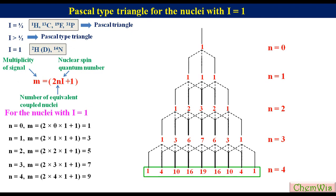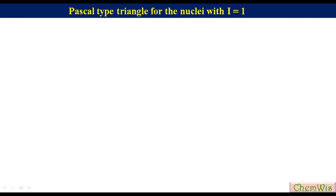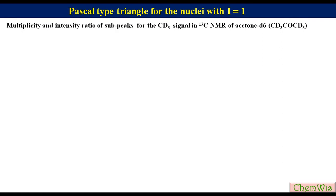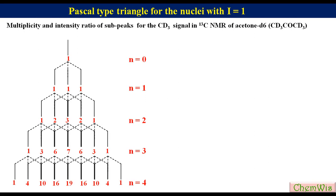In this way, we can find the relative intensity of sub-peaks of any multiplicity of an NMR signal resulting from the coupling with any number of equivalent nuclei of i = 1. Suppose we have to find the multiplicity and intensity ratio of sub-peaks for the CD3 signal in 13C NMR of acetone-D6. The i value for deuterium is 1. Using the Pascal type triangle we have just learned, since n = 3, the multiplicity will be a septet with the intensity ratio of sub-peaks 1:3:6:7:6:3:1.